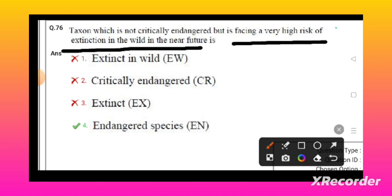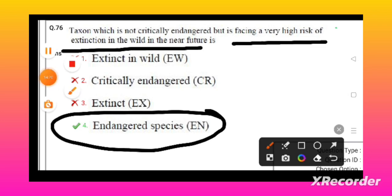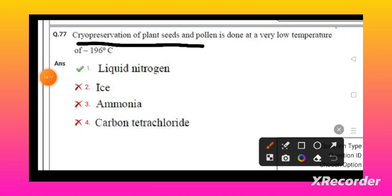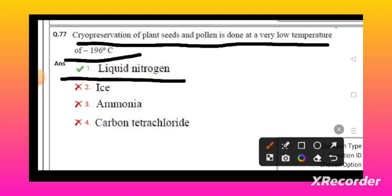Cryopreservation of plant seeds and pollens is done at very low temperature of minus 196 degrees Centigrade in liquid nitrogen. The most common indicator organism that represents water pollution - that is E. coli.